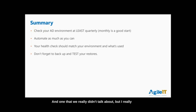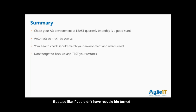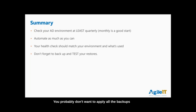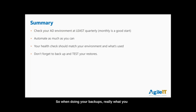One thing we didn't talk about but is really important: don't forget to back up your domain controllers and test restores. Not just restores because a domain controller dies, but also scenarios where Recycle Bin wasn't enabled and objects got flushed — you don't want to apply a full backup and lose users or workstations. In that case you'd need to do an authoritative restore, which is still a challenging process. When doing backups, System State is the number one thing you need to capture.